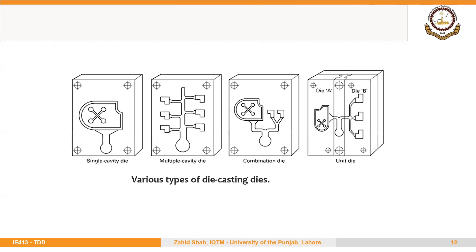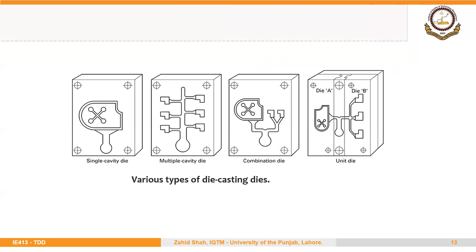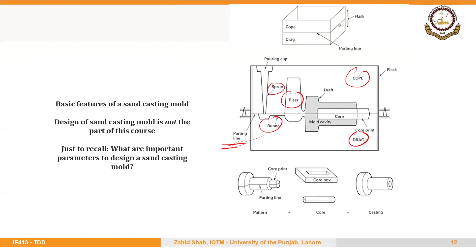This is a typical sand casting mold. It has different parts — the upper part is a cope, the lower is a drag, and there is a parting line in between. And of course there are other components like risers, sprue, runner and gates, and so on. We discussed the design aspects for a sand casting mold in second semester, so I won't be going into details here.